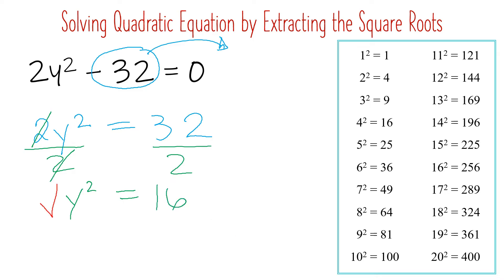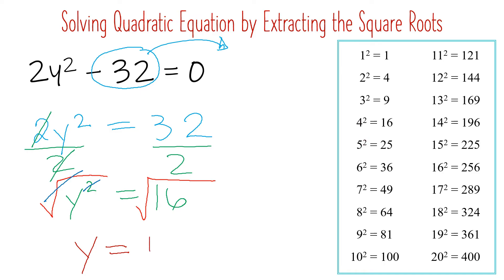Now we may extract the square root of both sides. The square root of the variable with an exponent of 2 — we can cancel the radical and the exponent. Now we only have y on this side. Then get the square root of 16. Looking at our list, 16 comes from 4 times 4, so the answer will be positive and negative 4. Therefore, y is equal to positive and negative 4.